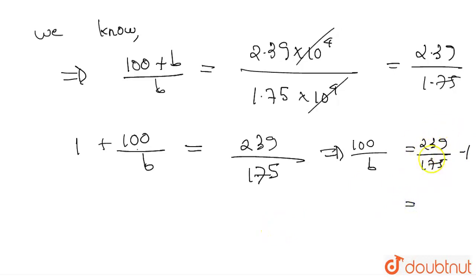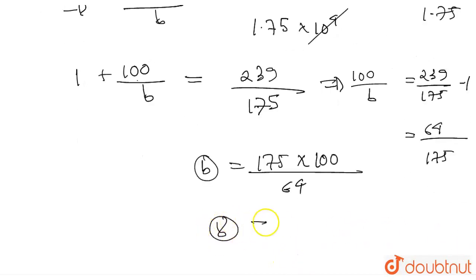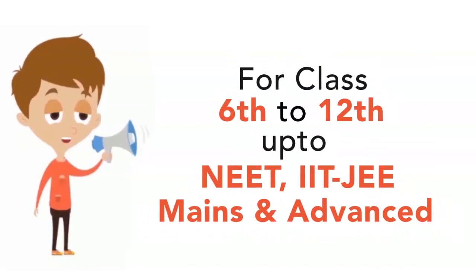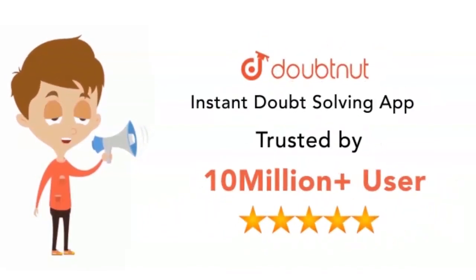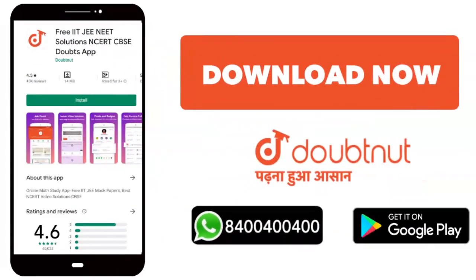This will be 64 divided by 175. So here, our B will be equal to 175 times 100 divided by 64. So B is equal to 273.44. This is our exact answer. Thank you.